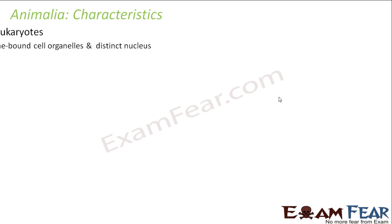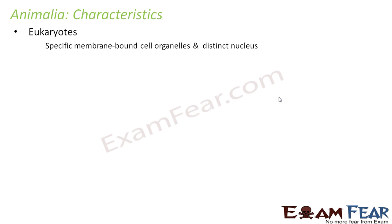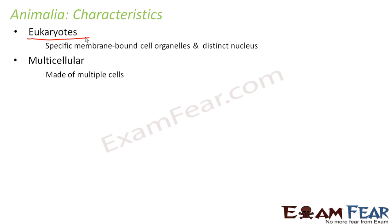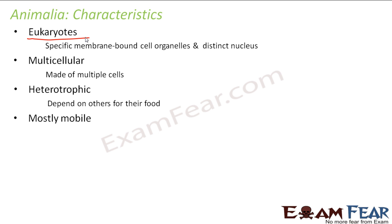So let us quickly look at the characteristics of this kingdom. They are eukaryotes — that is, they have specific membrane-bound organelles and a distinct nucleus. They are multicellular, made up of many cells. They are heterotrophic, meaning they cannot prepare their own food and depend on others. They are mostly mobile, capable of moving from one place to another, though how they move varies from animal to animal.